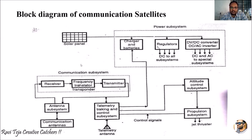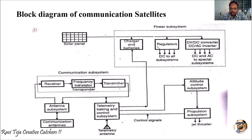Looking at the basic block diagram of any satellite, it starts with a solar panel. You may have come across satellites where the whole body is covered with solar panels, in order to take energy from the sun and convert it into electrical energy, which runs the whole satellite throughout its lifetime.